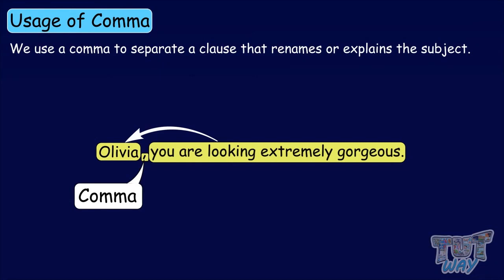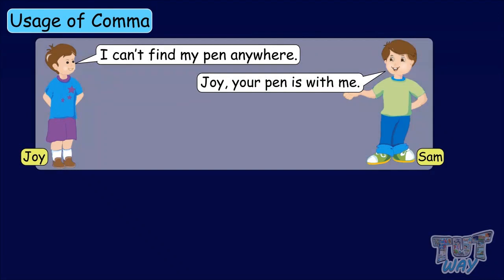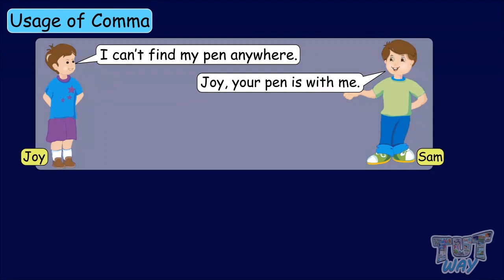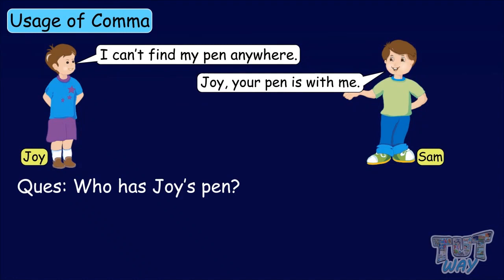Based on what we have learned about the concept of comma, we have some sentences and we have to answer the question. I can't find my pen anywhere. Joy, your pen is with me. According to this conversation between Joy and Sam, who has Joy's pen? Sam has Joy's pen.